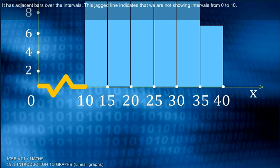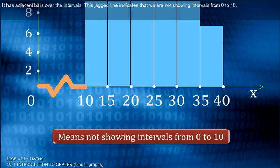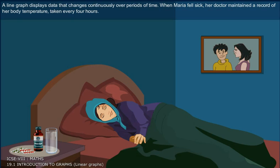This jagged line indicates that we are not showing intervals from 0 to 10. A line graph displays data that changes continuously over periods of time.